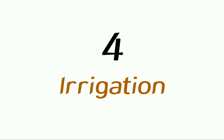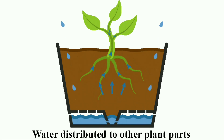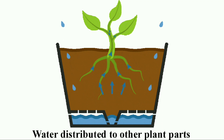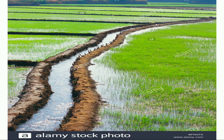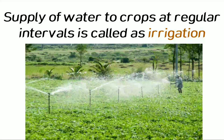In today's video, let us study about the fourth agricultural practice, that is irrigation. We know that all living organisms need water to live. Water is absorbed by the plants; along with water, minerals and fertilizers are also absorbed. To maintain the moisture of the soil and for healthy crop growth, fields have to be watered regularly. Supply of water to crops at regular intervals is called irrigation.